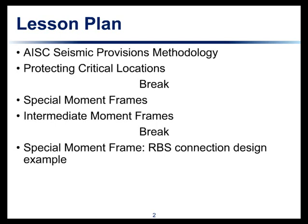We'll also talk about in the second section the pre-qualified connections documents from AISC. After our second break we'll do a step-by-step example for a reduced beam section connection that will illustrate the items we're talking about in the first sessions. I'm probably going to go a little quicker in the first two sessions so that we have time left over to go through the example in detail.